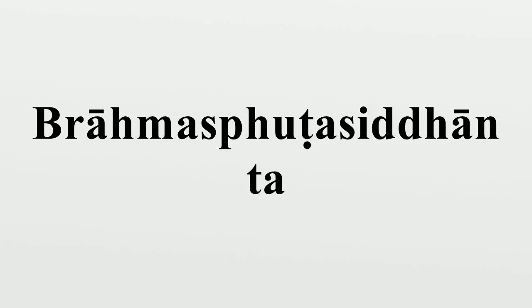The Brahmasphuta Siddhanta is the main work of Brahmagupta, written in c. 628. This text is notable for its mathematical content, as it contains ideas including a good understanding of the role of zero, rules for manipulating both negative and positive numbers, a method for computing square roots, methods of solving linear and quadratic equations, and rules for summing series, Brahmagupta's identity, and Brahmagupta's theorem.